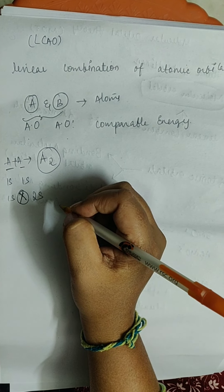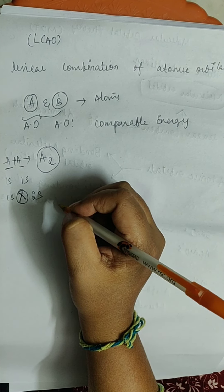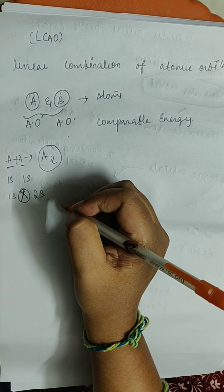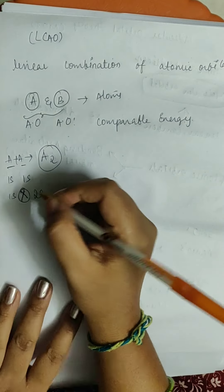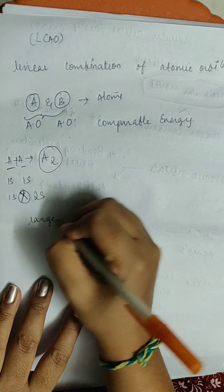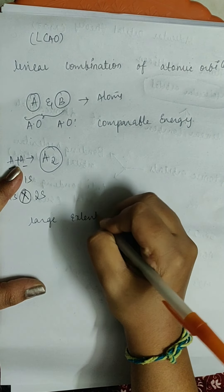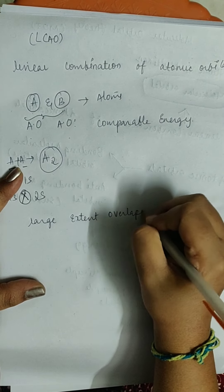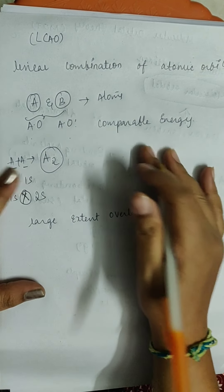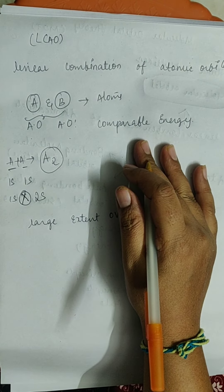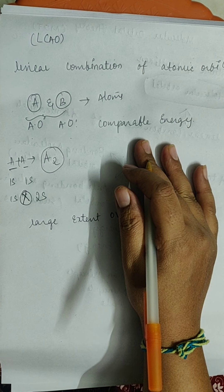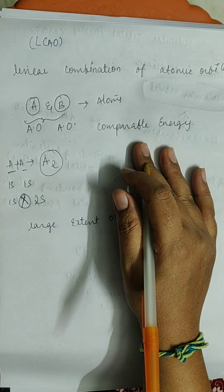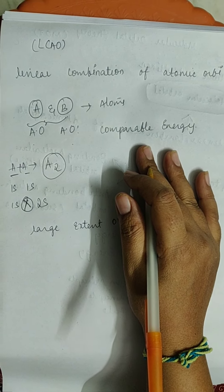In a homoatomic molecule A₂, the 1s of one A will combine with the 1s of the other A, but not with the 2s due to the energy gap. Additionally, atomic orbitals combine only if there is a large extent of overlap, and they should have the same symmetry about the molecular axis to mix easily.